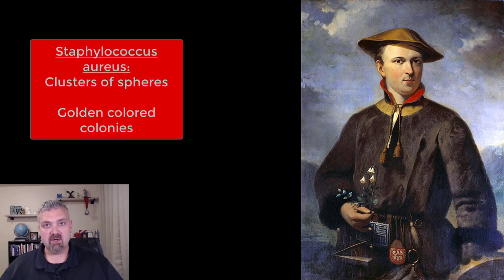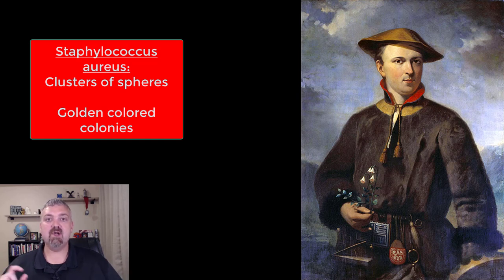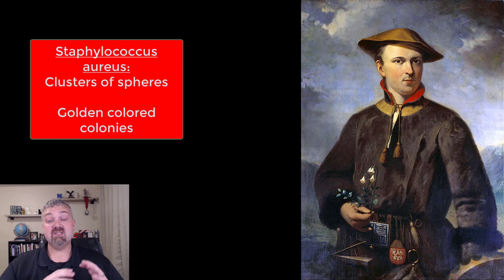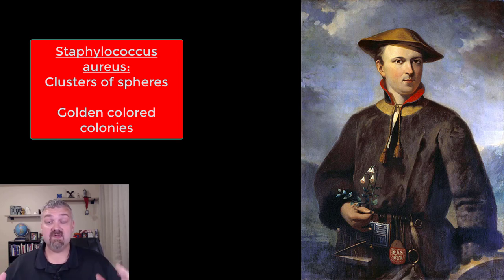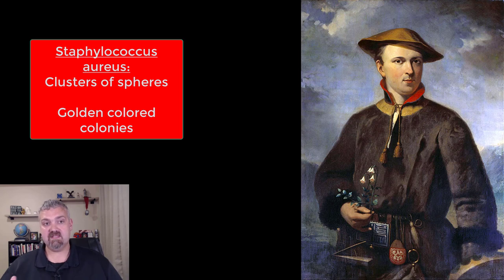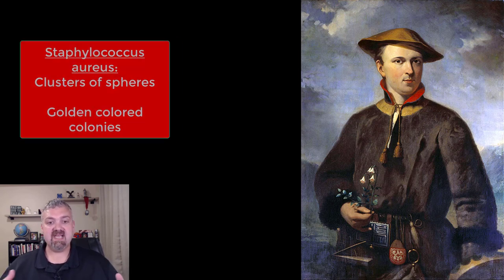Another example would be Staphylococcus aureus — you've all heard of staph or staph infections. Staphylococcus, as we'll learn in a few chapters, means clusters of spheres, which is very descriptive. And aureus comes from the gold color that the colonies form. Those are some really good examples of descriptive microbe names.